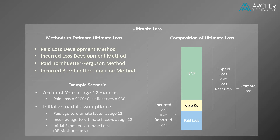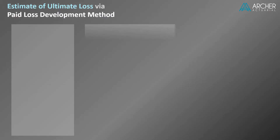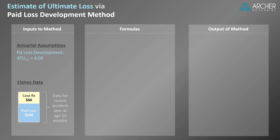Let's get started by looking at the paid loss development method. The paid loss development method relies on two inputs: one from the underlying claims data and one actuarial assumption. We will use the actual paid loss for the accident year under review and an assumption about loss development in the form of an age-to-ultimate factor. In this example, the data and the age-to-ultimate factor are each at age 12 months.